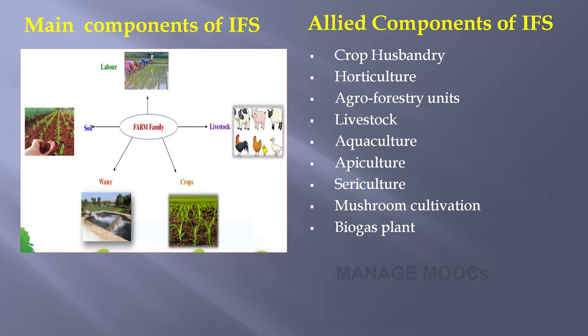In the allied component, we can enlist all allied activities including crop husbandry, horticulture, agroforestry, livestock, aquaculture, apiculture, sericulture, even mushroom cultivation, and biogas plant.